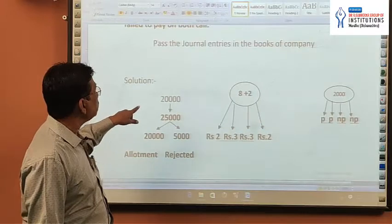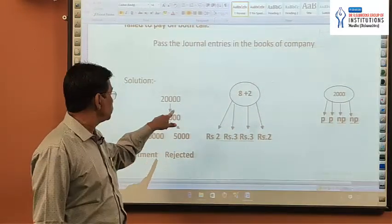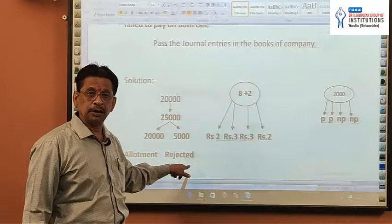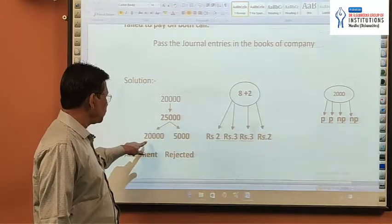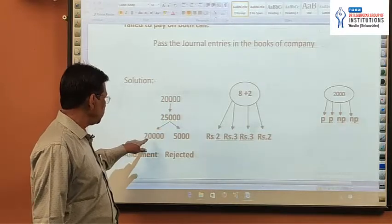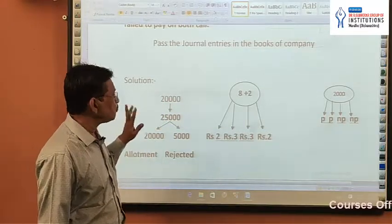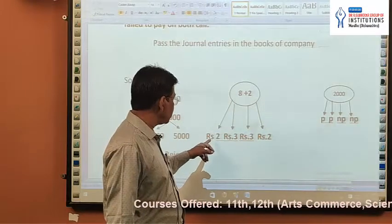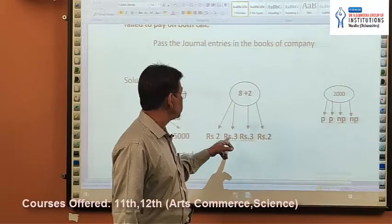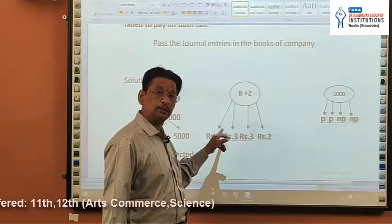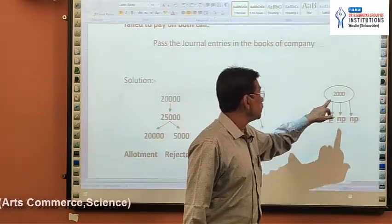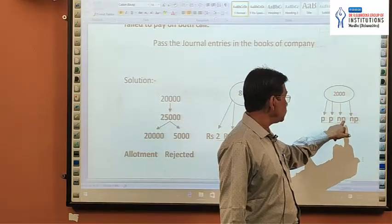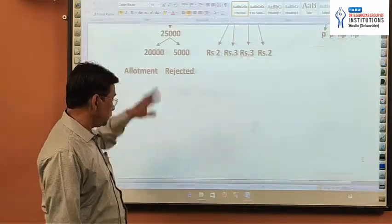So our chart: company issued 20,000 shares, applications received for 25,000 — there is 5,000 excess applications which are rejected by company, meaning immediately the application fee is refunded. Allotment were made properly, means as per their issue, 20,000 shares allotted by company. The face value is Rs.8 and premium is Rs.2. Payment schedule: Rs.2 on application, Rs.3 on allotment (Rs.1 allotment money plus Rs.2 premium), Rs.3 first call, Rs.2 final call. Company allotted 2,000 shares to Mr. Ravi, who had failed to pay on both calls — first and final call.